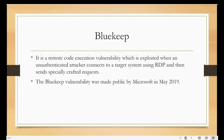Targeting kernel space memory can cause system crashes. The BlueKeep exploit takes advantage of a vulnerability in the Windows RDP protocol that allows attackers to gain access to a chunk of kernel memory, consequently allowing them to remotely execute arbitrary code at the system level without authentication. The key area to focus on is the kernel memory.